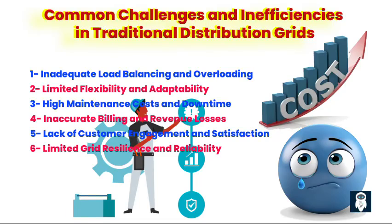Two: Limited flexibility and adaptability. Traditional distribution grids often lack the flexibility to accommodate the integration of renewable energy sources, electric vehicles, and other new technologies. This rigidity hinders the grid's ability to adapt to changing energy trends and demands.